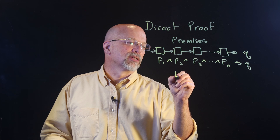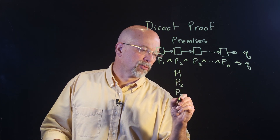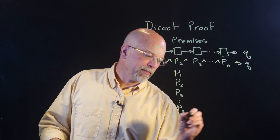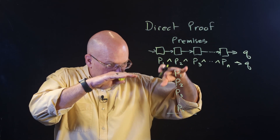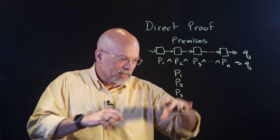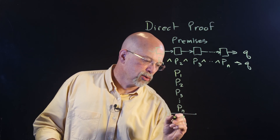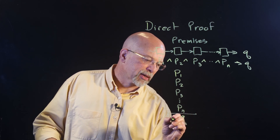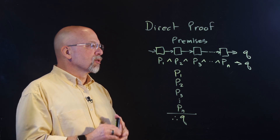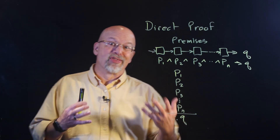This is often written as P1, P2, P3, all the way down to PN — this stack, this process that we have to get through all of these before we get to our conclusion. Typically, our conclusion is identified by using those three little dots, which represent 'therefore.'